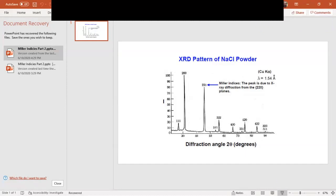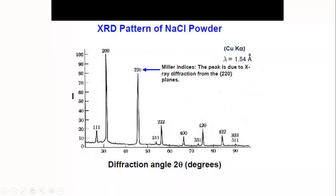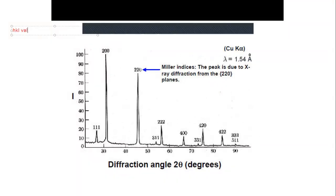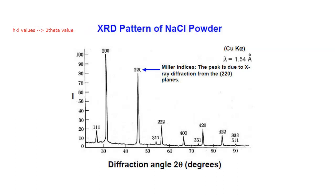This is the powder pattern of sodium chloride and what we want to do is determine what the two-theta values are. It's already given us the hkl indices. We don't know exactly what two-theta value we have for each of these indices. What we want to do is take the hkl values and determine the two-theta — that's kind of the opposite of what we did yesterday. Sodium chloride is a cubic system.